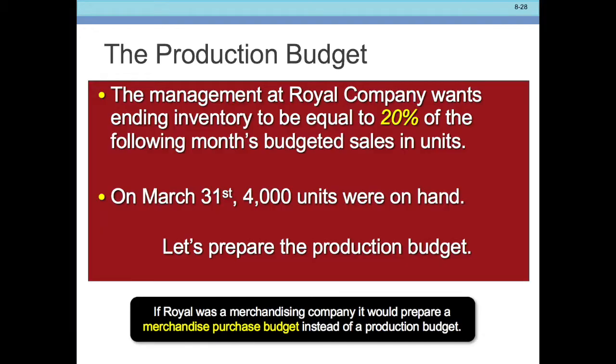We've moved on to our production budget. The first thing in our production budget is to figure out how many units we need to produce. When we look at the facts here, the Royal Management Company wants ending inventory to equal 20% of the following month's units in sales — that's the following month's units in sales.